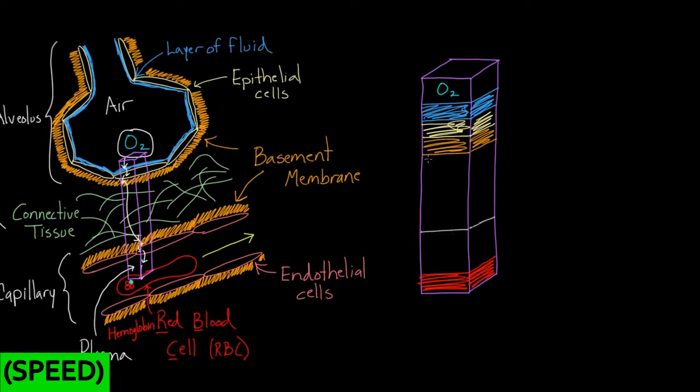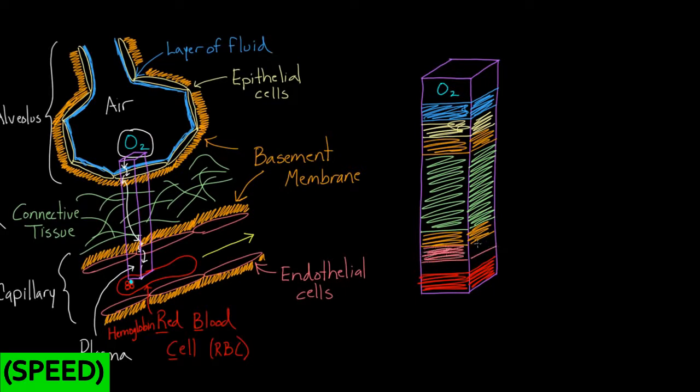Then you have all that connective tissue, a nice thick layer. The basement membrane and the connective tissue, they're both chock full of proteins, different types of proteins, but both there for structural support. Got some more basement membrane here on this side, right before you get to the endothelial cells. This is the cell that offers the capillary walls. Then we've got some plasma. The oxygen has to get through some plasma, and finally it's going to get into the red blood cell.